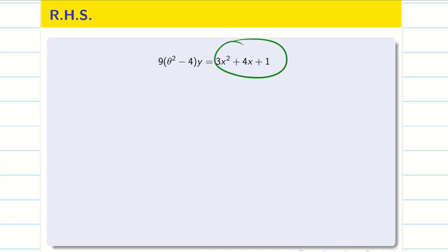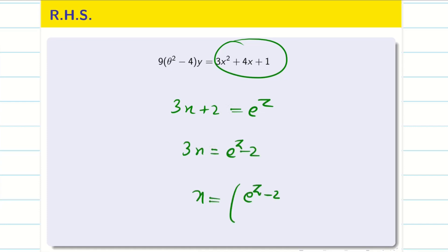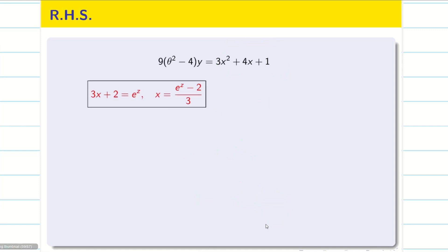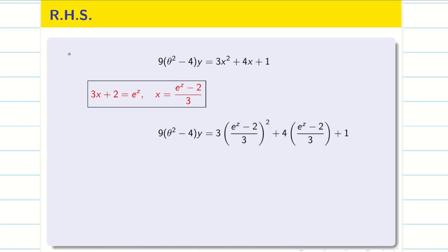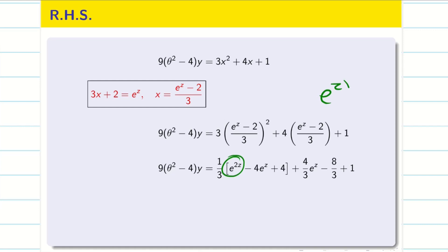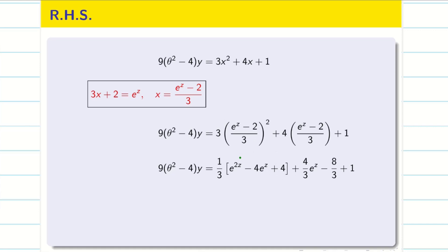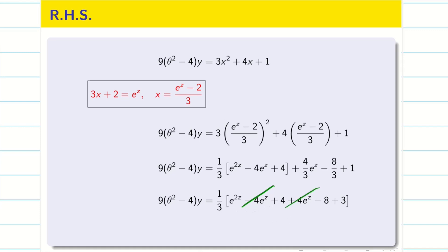Now let us find the PI; everything must be in terms of z. Since 3x + 2 = e^z, we get 3x = e^z − 2, so x = (e^z − 2)/3. Substituting this x value on the right-hand side and simplifying using (a − b)² expansion, e^z whole square gives e^(2z). So we get e^(2z) − 4e^z + 4, divided by factors, and after simplification taking LCM, the −4e^z and +4e^z cancel, leaving the simplified RHS expression.